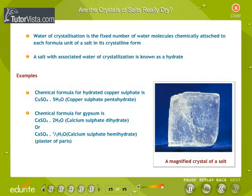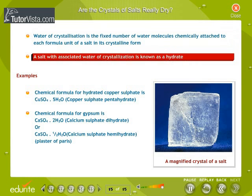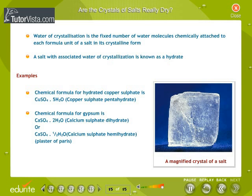Are crystals of salts really dry? Water of crystallization is the fixed number of water molecules chemically attached to each formula unit of a salt in its crystalline form. A salt with associated water of crystallization is known as a hydrate. The structures of hydrates can be quite elaborate because of the existence of hydrogen bonds.